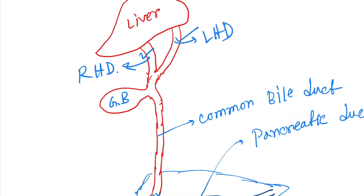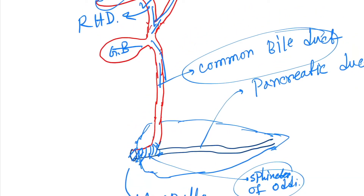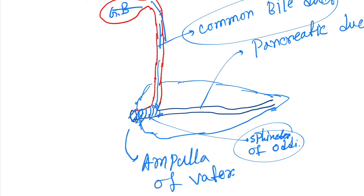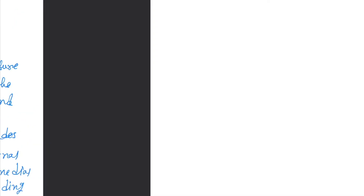Here you can see the left hepatic duct and the right hepatic duct coming from the liver, going to the gallbladder and then forming the common bile duct. The common bile duct then confluences here with the pancreatic duct, and this conical portion is called the Ampulla of Vater.